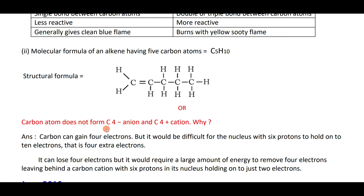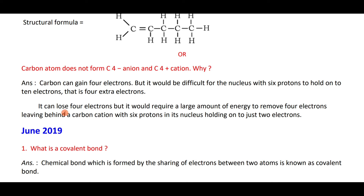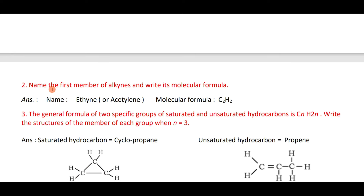Carbon does not form C⁴⁻ or C⁴⁺ ions because gaining four electrons would be difficult for a nucleus with six protons to hold ten electrons, and losing four electrons would require a very large amount of energy. Instead, carbon shares electrons and forms covalent bonds. A covalent bond is a chemical bond formed by the sharing of electrons between two atoms.